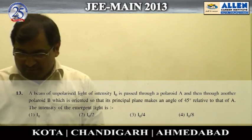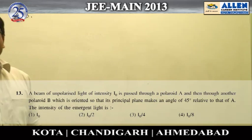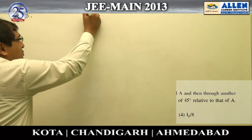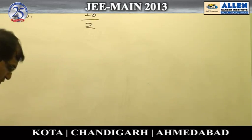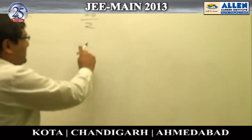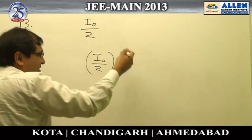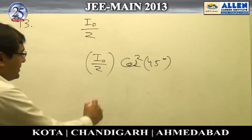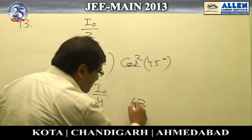Question number 13: unpolarized light is incident on a polarizer. After passing through the first polarizer, the intensity becomes half of the original, I₀/2. When it then passes through a second polarizer at 45°, the intensity changes by cos²45°, giving a final intensity of I₀/4. Hence the correct answer is option number 3.